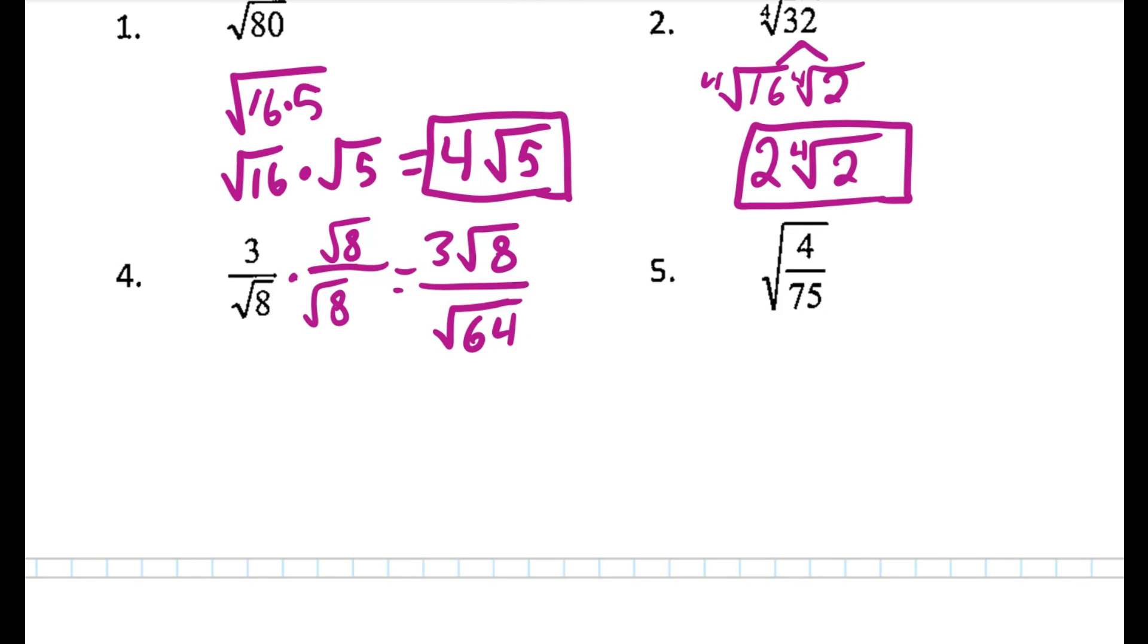Now, square root of 64 is really just 8. Now, 3 square root of 8, that's the same as saying 3 square root of 4 times square root of 2. So this is really saying 3 times 2 times the square root of 2 all over 8. And then I'm going to take a 2 out of the top and bottom. 2 and 8 becomes 3 square root of 2 over 4.